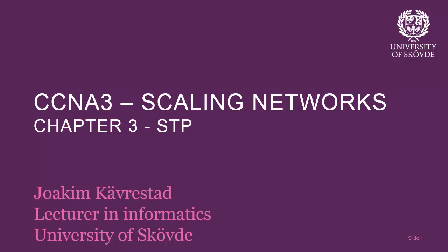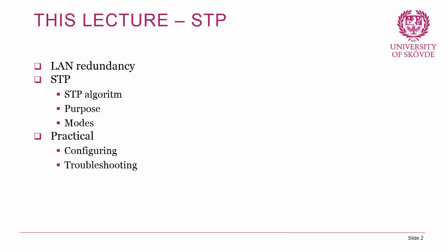It's time for the third chapter of CCNA 3 version 6 with Joakim Kjövrestad from the University of Skövde. The topic for this lecture is the Spanning Tree Protocol. We're going to look at LAN redundancy — how you can build redundancy in a local area network using multiple sets of equipment and redundant links — and the issues that come with LAN redundancy, the solution for which is called Spanning Tree Protocol, or STP. We'll look at the STP algorithm, its purpose, and different modes you can configure it in.